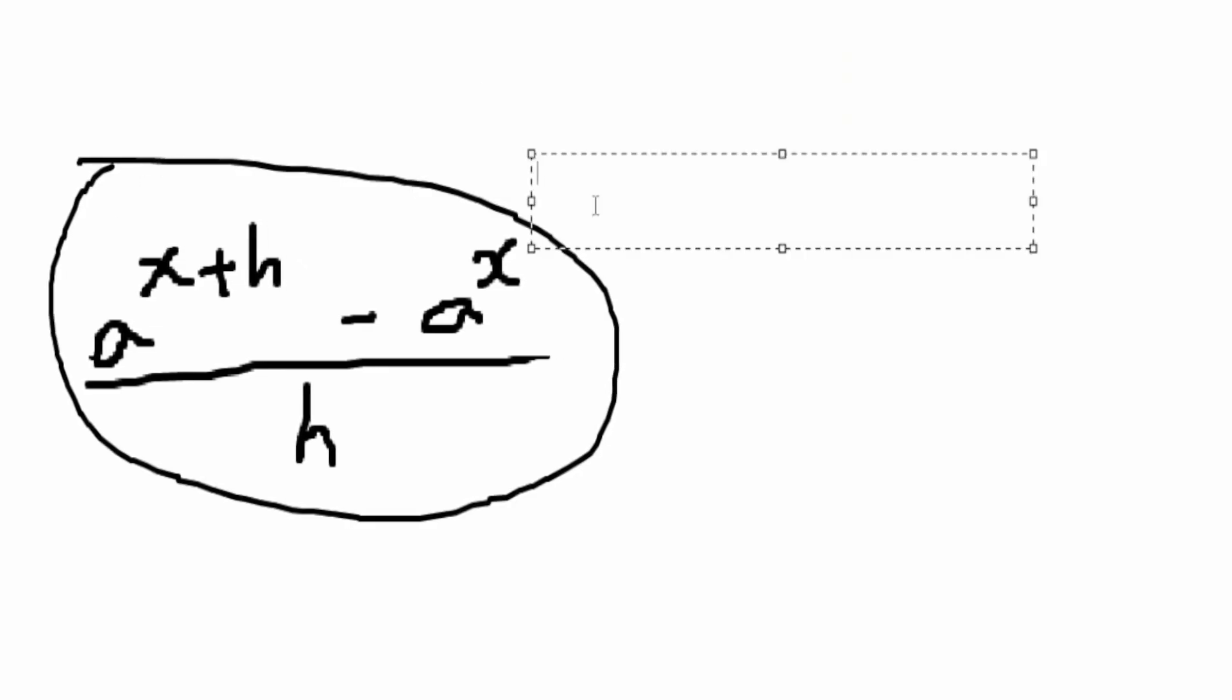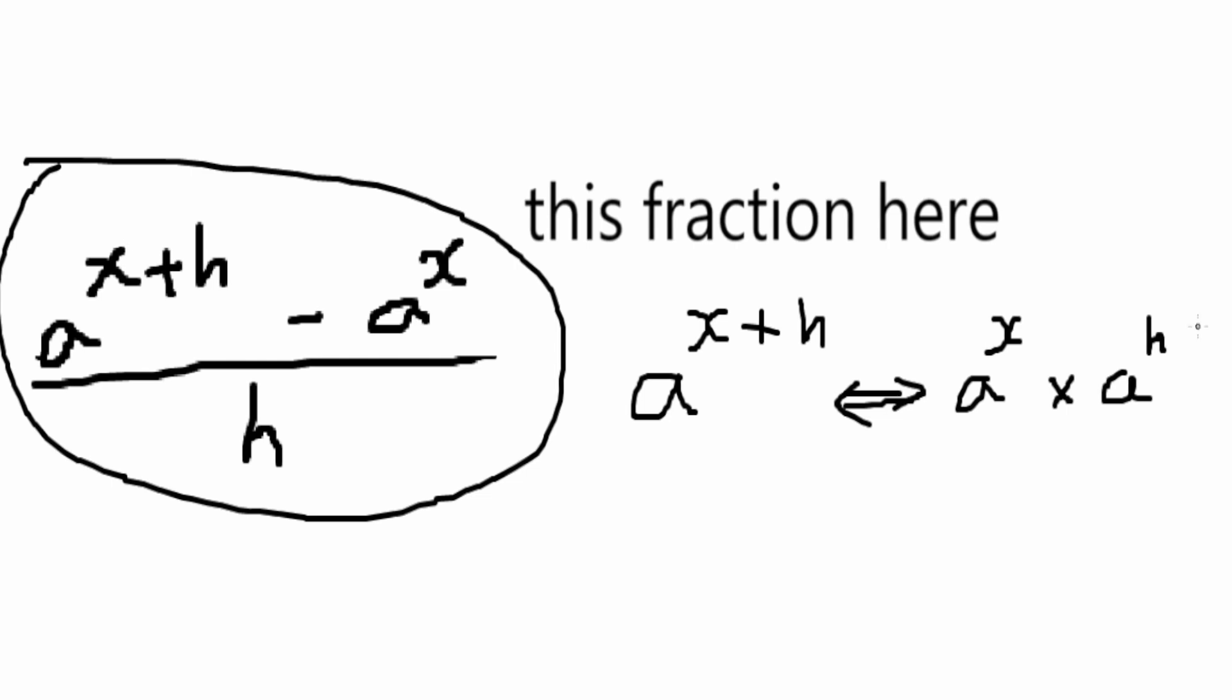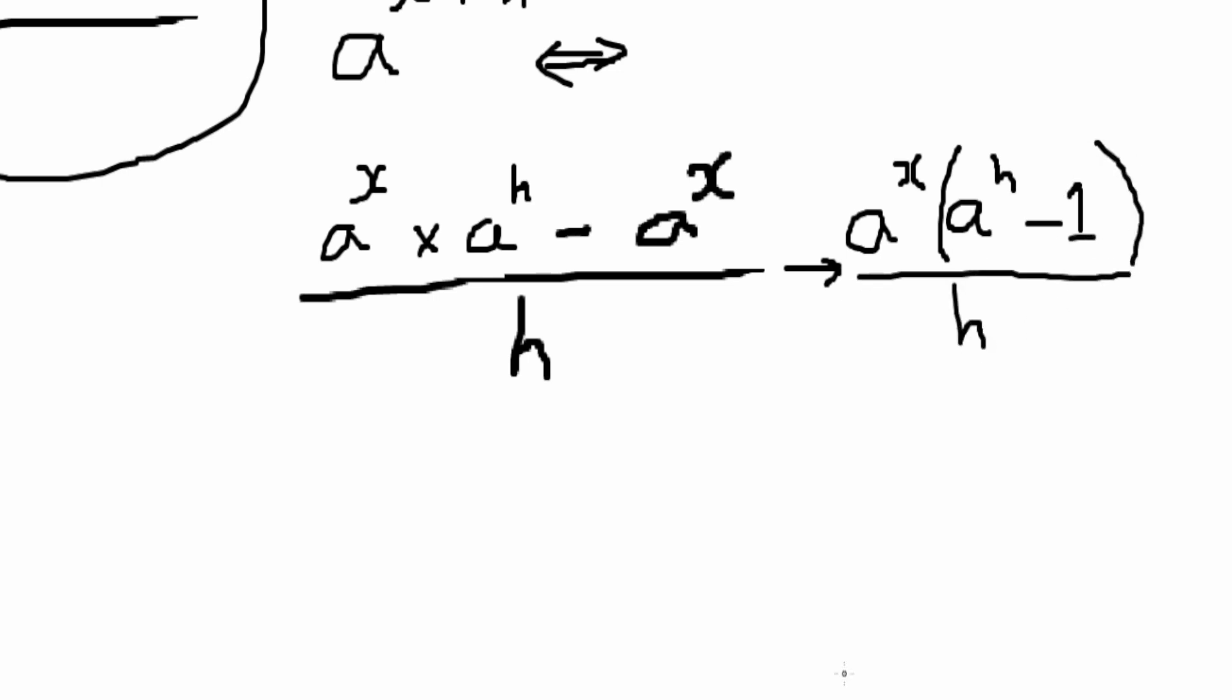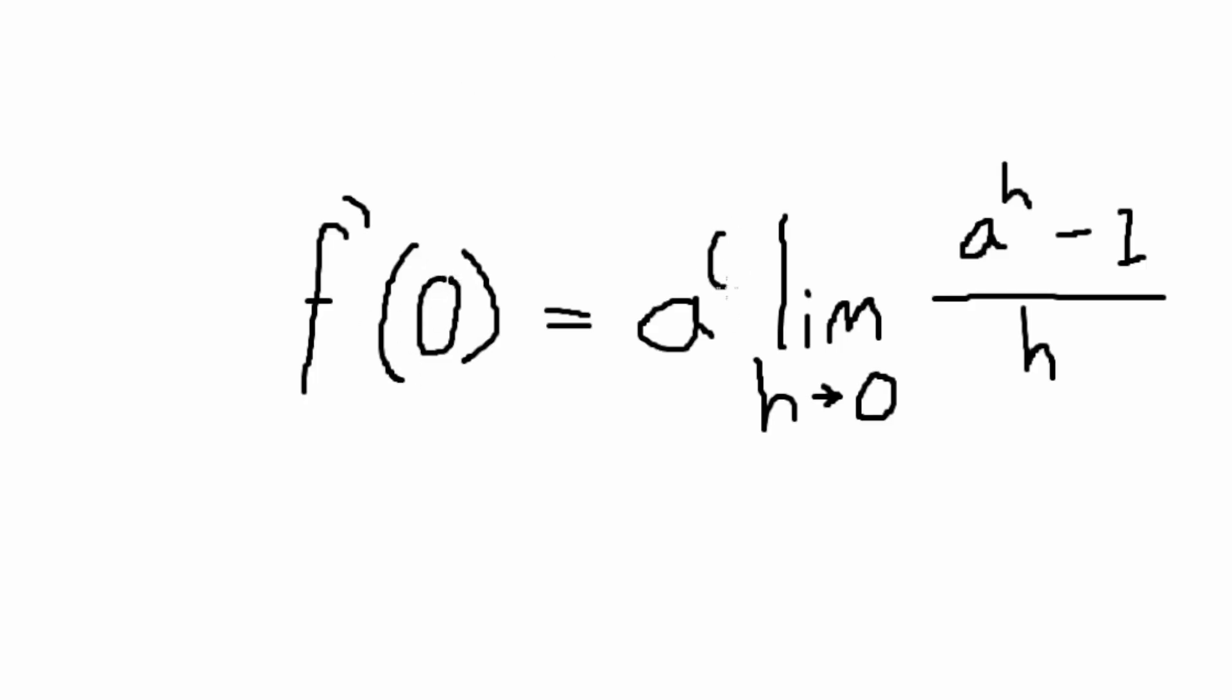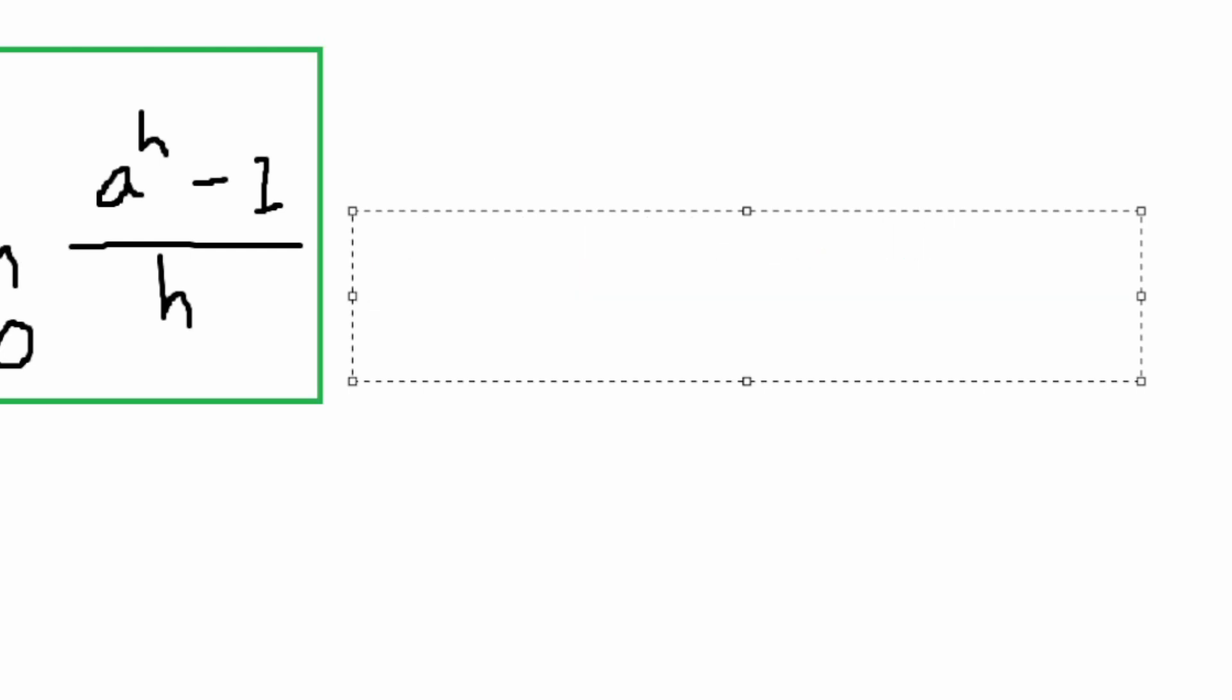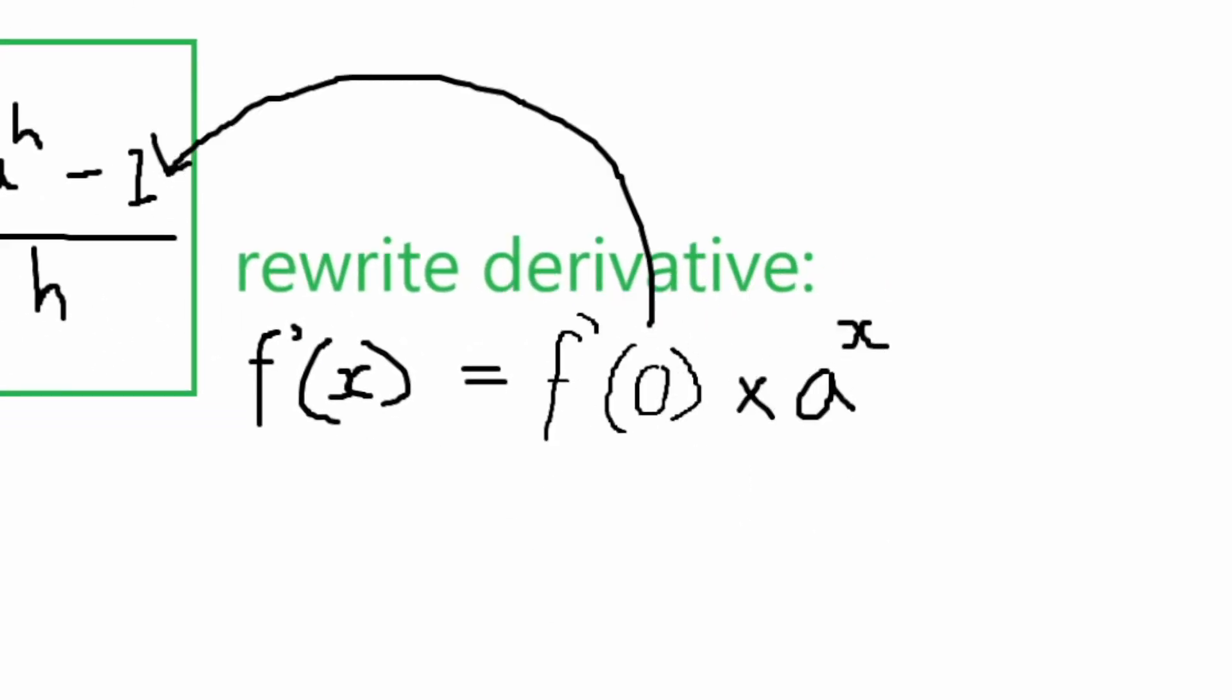Now that we have this fraction here, we can apply the fact that a to the power of x plus h is the same as a to the power of x times a to the power of h. And given this, we can factorize out the numerator into a to the power of x times by a to the power of h minus 1. Because a to the power of x is technically the coefficient of the fraction, we can pull it to the outside to get this. Now if we set x equal to 0 for this derivative, this derivative at 0 is equal to that limit fraction, because a to the power of 0 is 1, so it's 1 times that, and therefore we can rewrite our derivative as f prime of x equals f prime of 0 times a to the power of x.